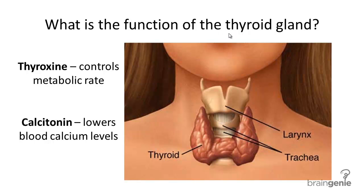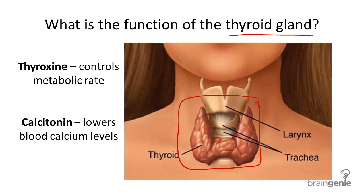What's the structure and function of the thyroid gland? The thyroid gland is located in the anterior part of the neck and is an important gland in the endocrine system that affects metabolism.